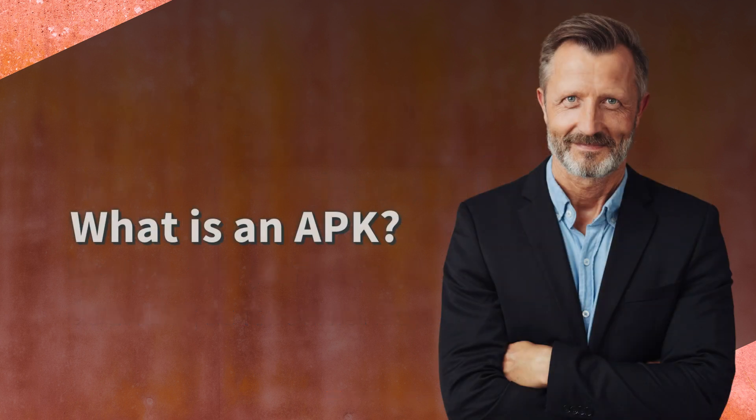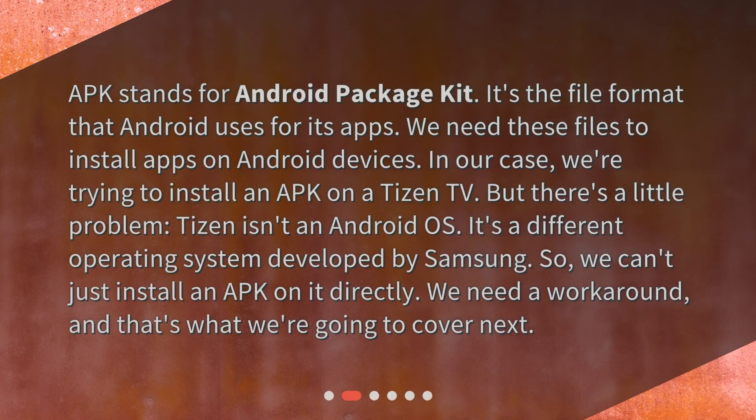What is an APK? APK stands for Android Package Kit. It's the file format that Android uses for its apps. We need these files to install apps on Android devices. In our case, we're trying to install an APK on a Tizen TV. But there's a little problem — Tizen isn't an Android OS. It's a different operating system developed by Samsung. So, we can't just install an APK on it directly.